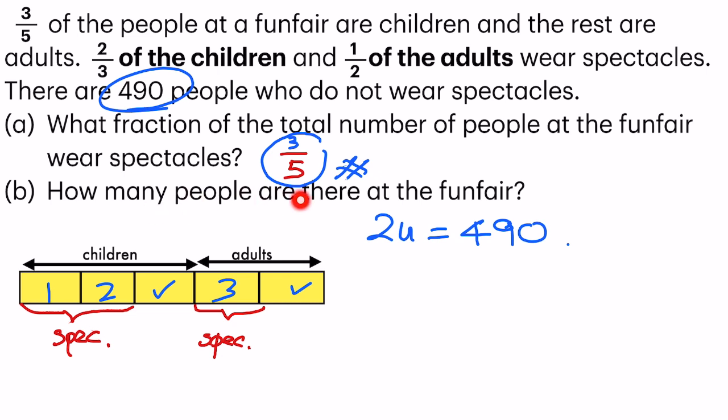Now, B. How many people are there at the funfair? When they say people, it refers to children and adults. So 1, 2, 3, 4, 5. There are 5 units of people all together. And just now, from the statement, we know that 2 units is equal to 490.